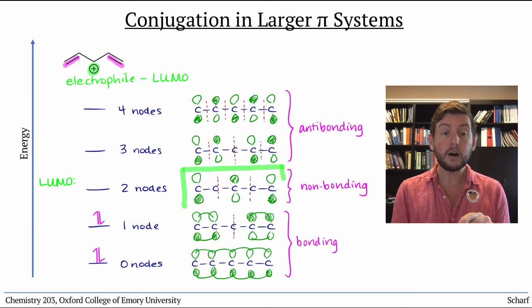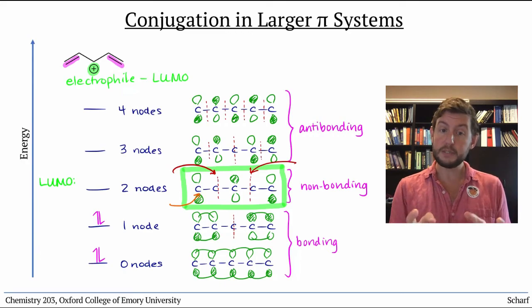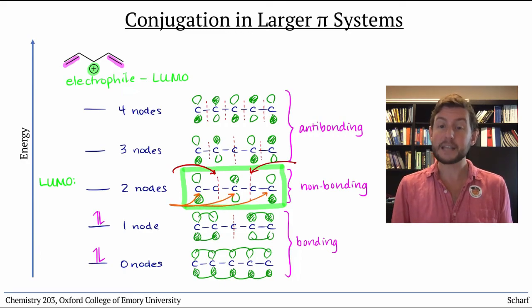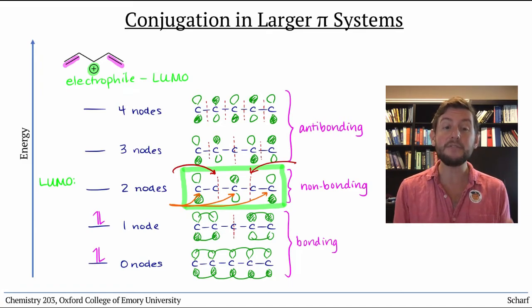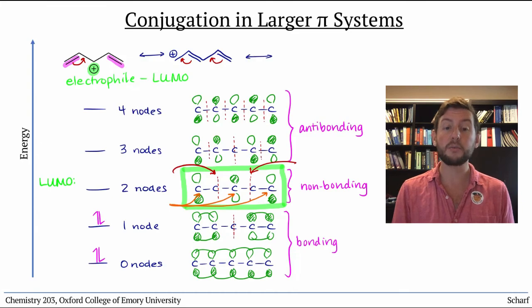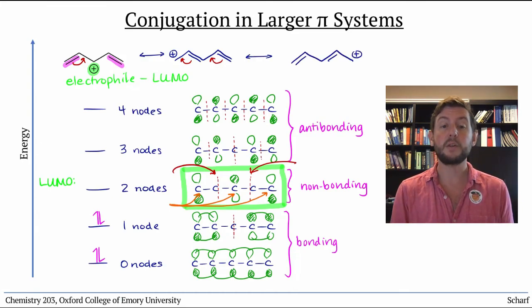Since the LUMO has nodes at these two atoms, but has lobes at all three of these atoms, it can accept electrons at any of these three sites. This is reflected in the resonance structures. We can draw resonance structures with positive charge at all three of those carbon atoms, but no resonance structures where the positive charge is on the other two atoms.